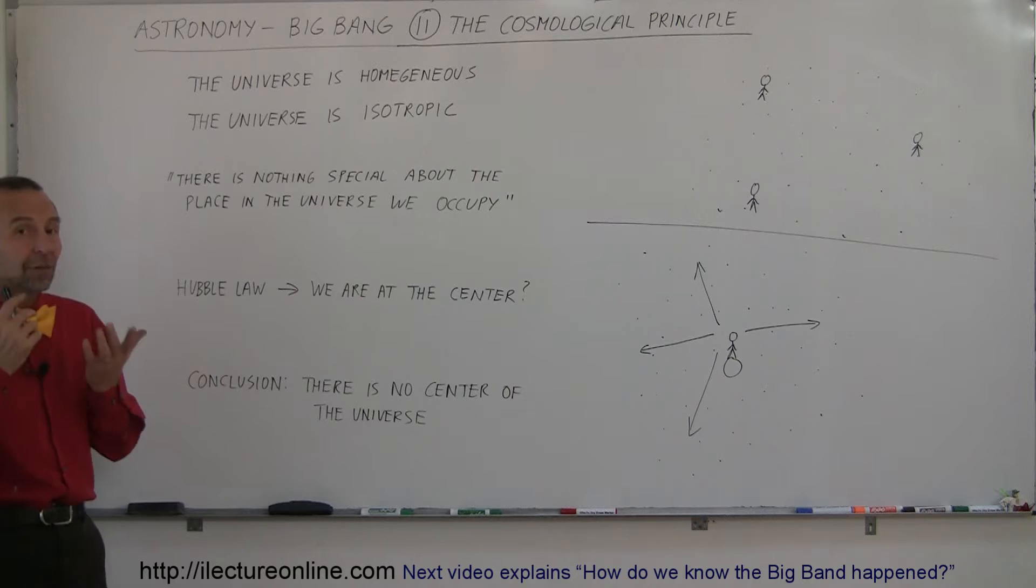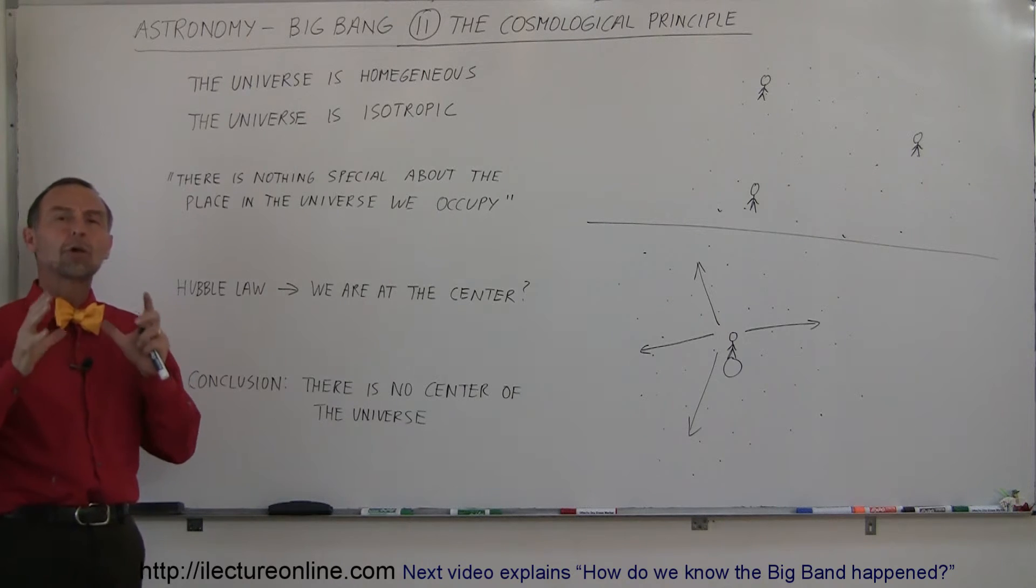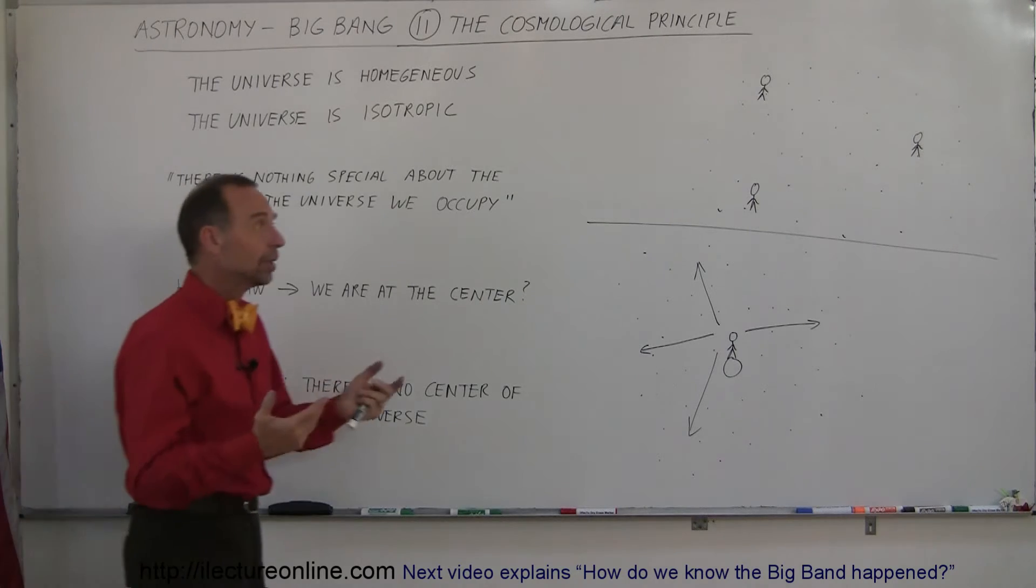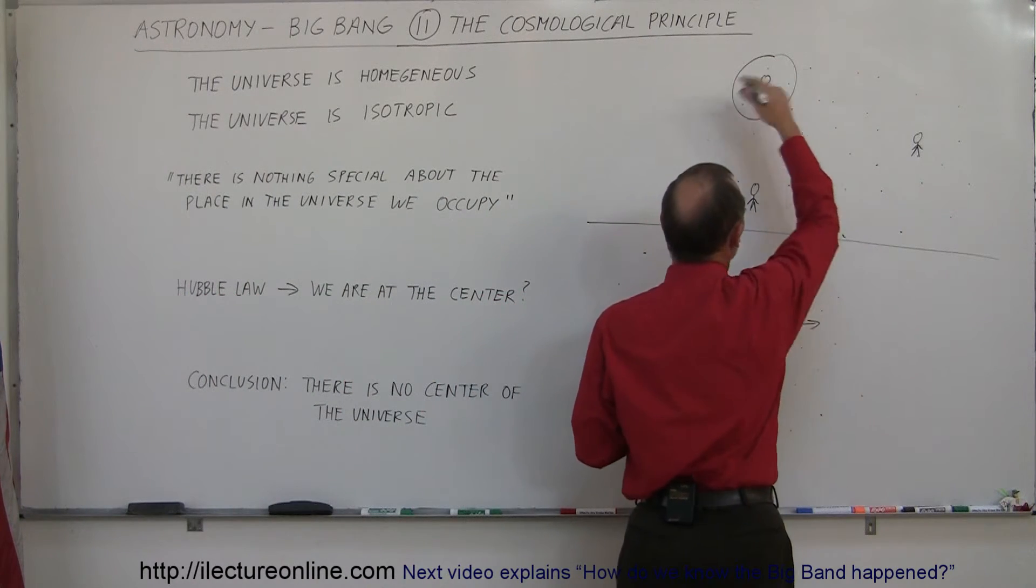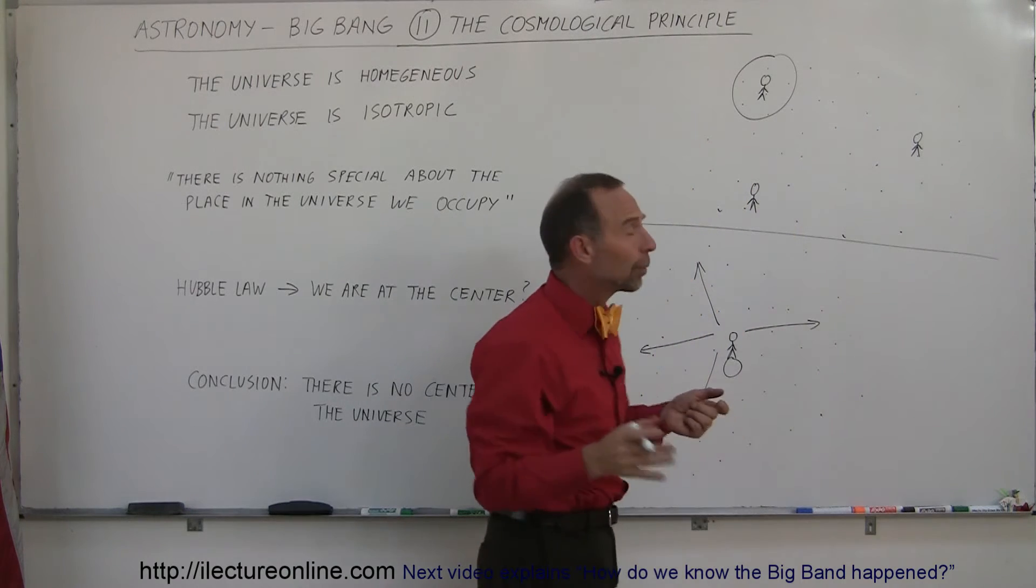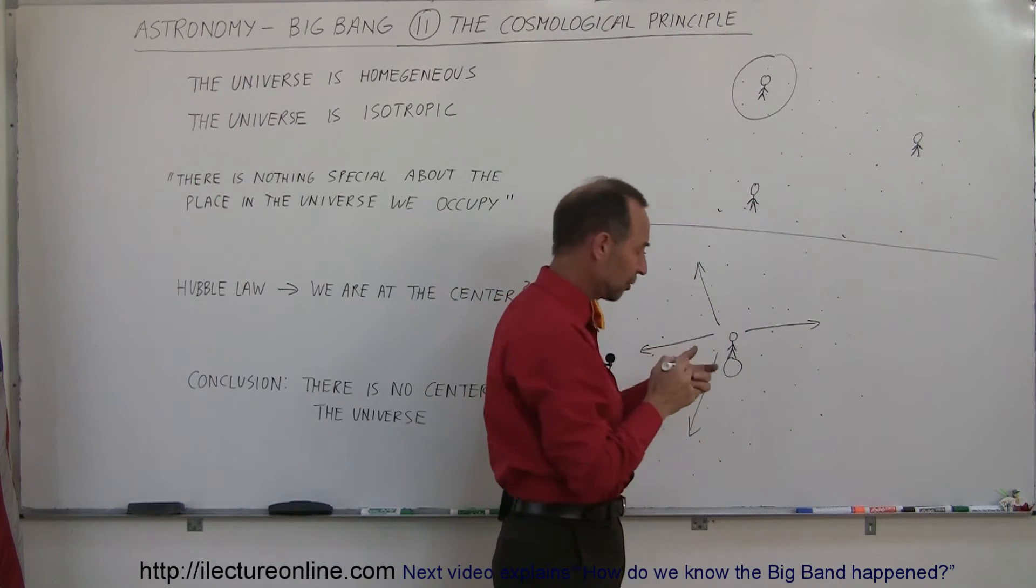And so Einstein came up with a concept as well where he thought, I believe that the universe is what we call homogeneous. What does that mean? Well, let's say that we live right here in our universe, right there, and we look all around us and the universe seems to look pretty well the same everywhere we look in different directions.